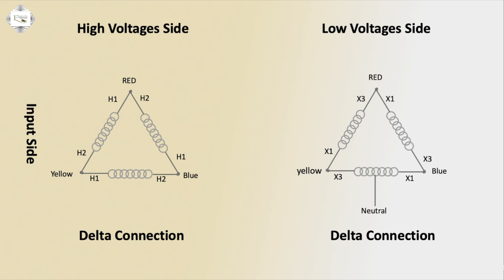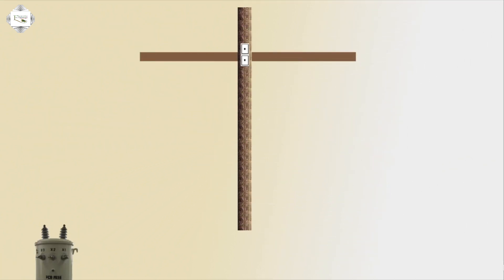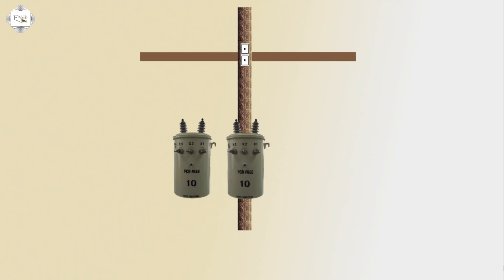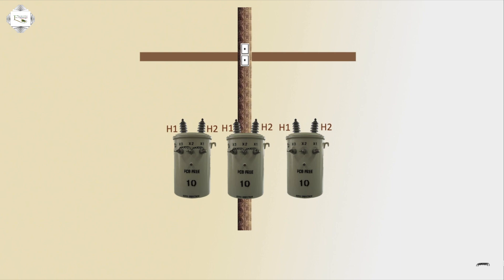Last neutral connection on the outgoing side. Three transformers on electric poles. Input S1, S2 coils — secondary coil, two coils. High voltage side delta connection and low voltage side delta connection.